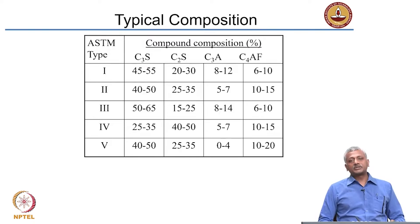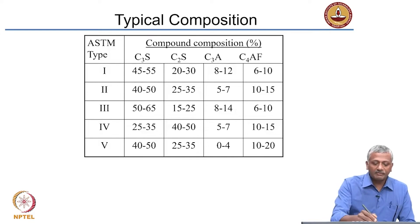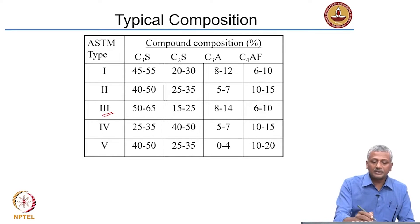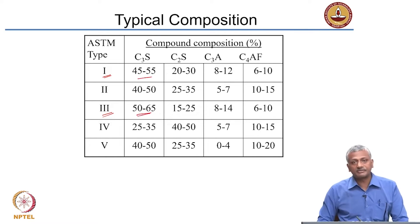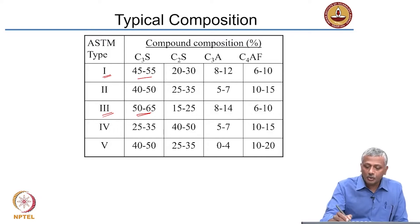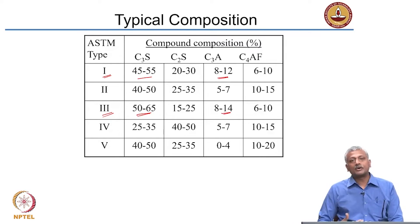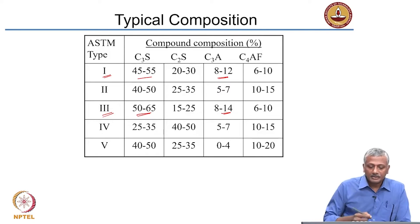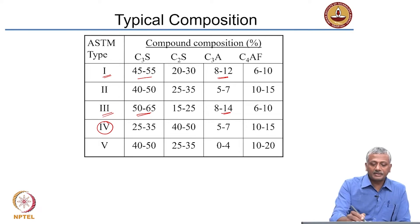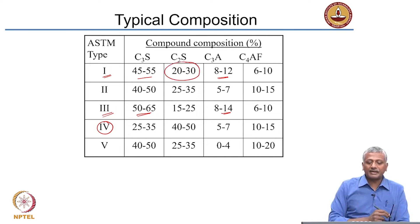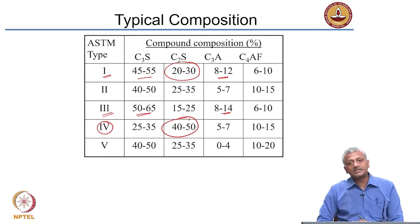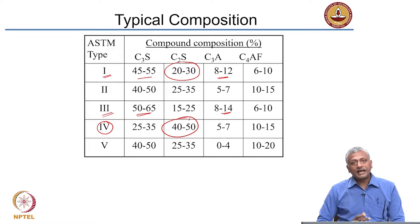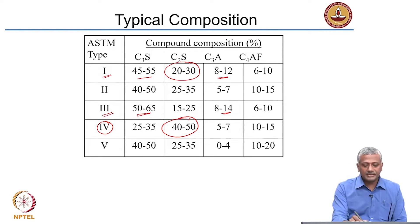This is the typical composition given by ASTM for the five different types of cement. Comparing high early strength Type 3 with general purpose Type 1: instead of 45 to 55 percent C3S, you have 50 to 65 percent in Type 3 — more C3S. You may also want to increase C3A because that is also responsible for early strengthening. For Type 4, the low heat cement, C2S was 20 to 30 percent in Type 1, but in Type 4 it is 40 to 50 percent C2S, and you reduce components that produce high heat like C3S or C3A.